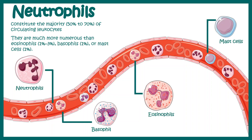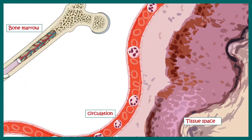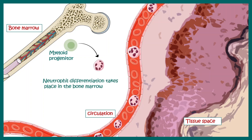Neutrophils are very important for the body. Let's talk about the development of neutrophils. Neutrophils are born in the bone marrow and they are derived from the myeloid progenitor lineage. From myeloid progenitors, neutrophils develop in subsequent steps and then they get secreted into the bloodstream.